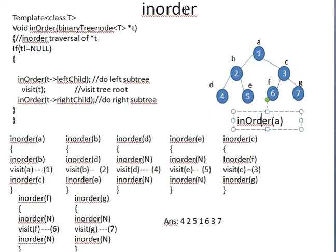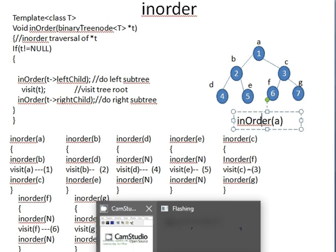This sketch should help you understand the in-order program better. You can now try to write the post-order program yourself, where you work with the left child, then right child, then visit(t). Write that program and trace it - we will trace it together in the next class. That's all for today, thanks.